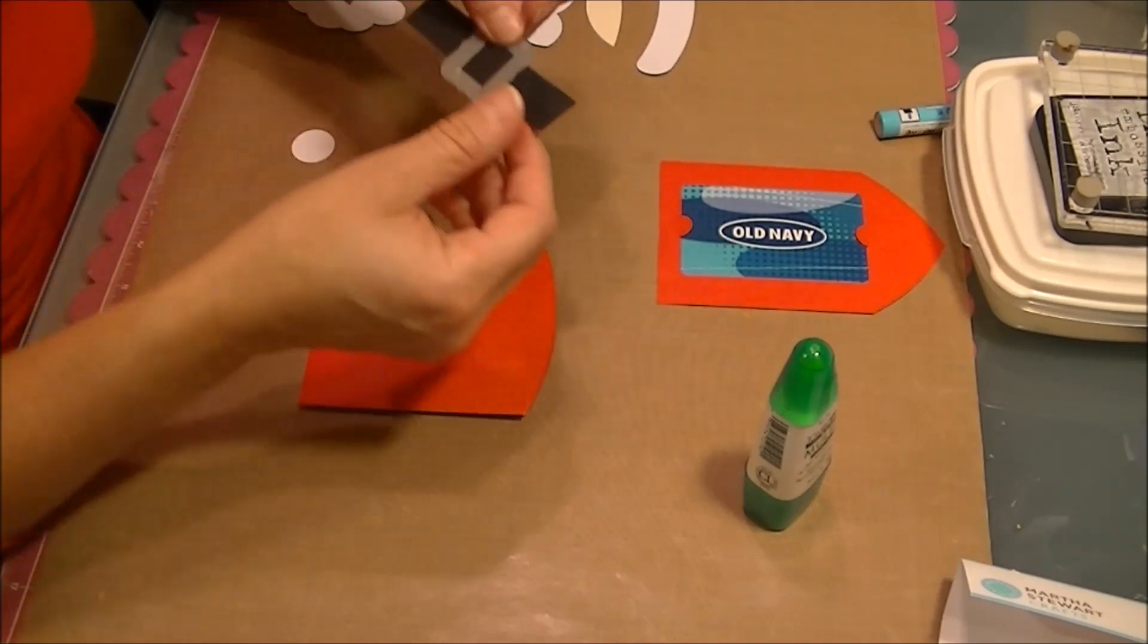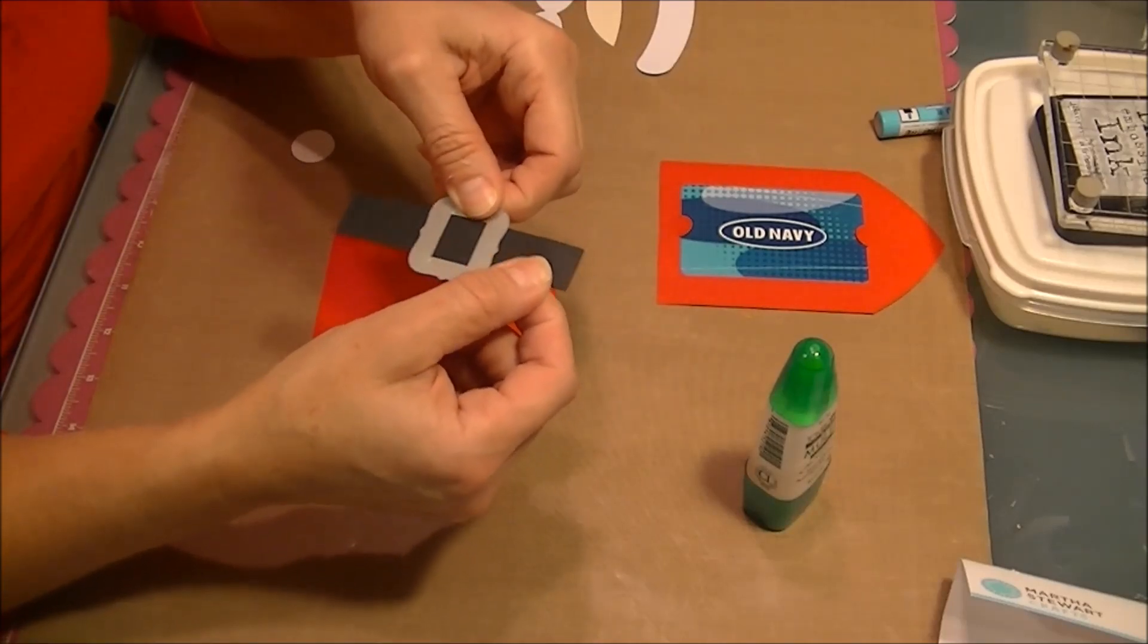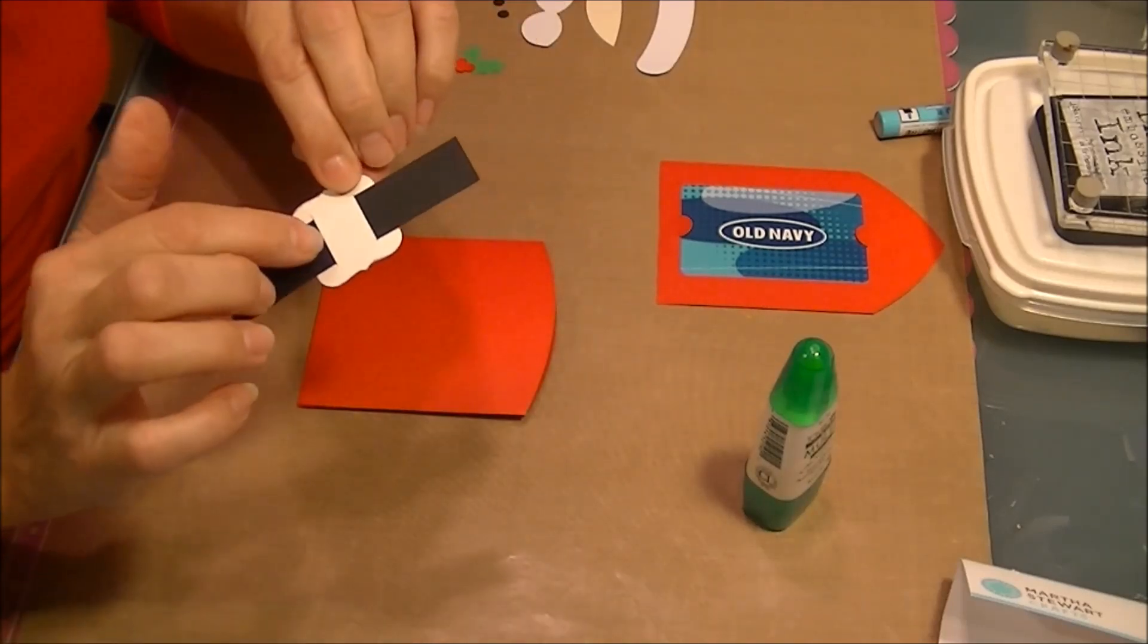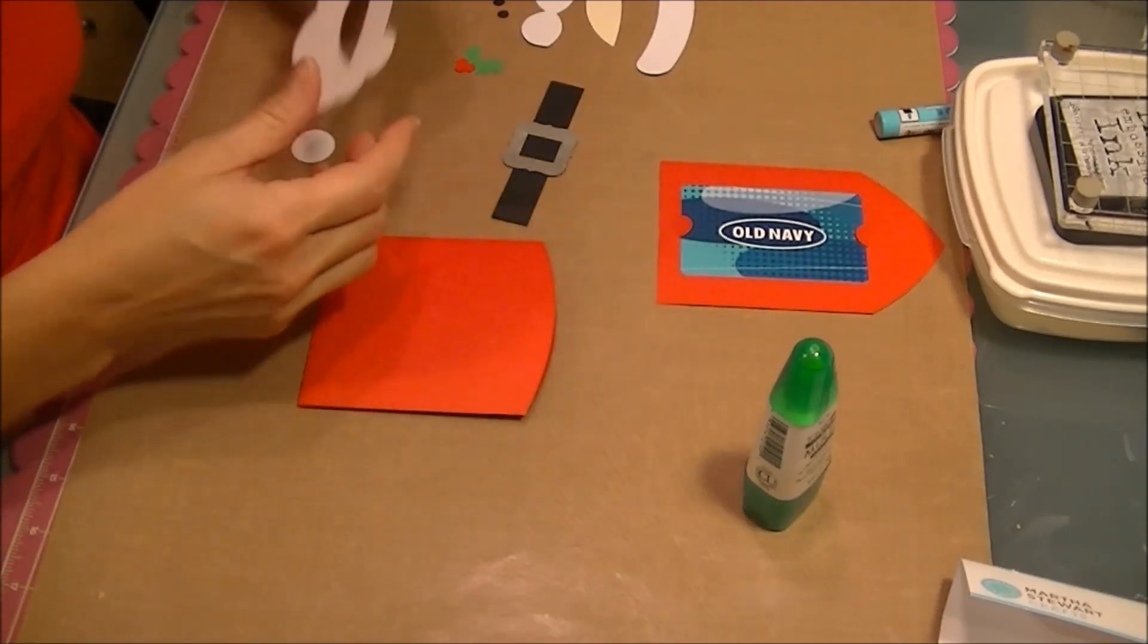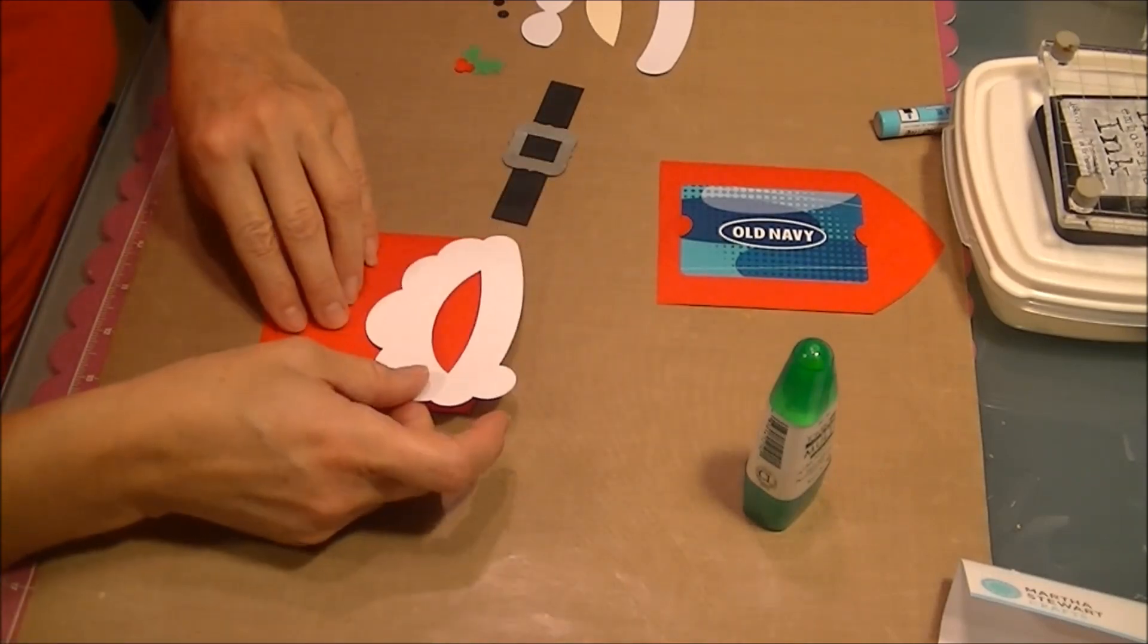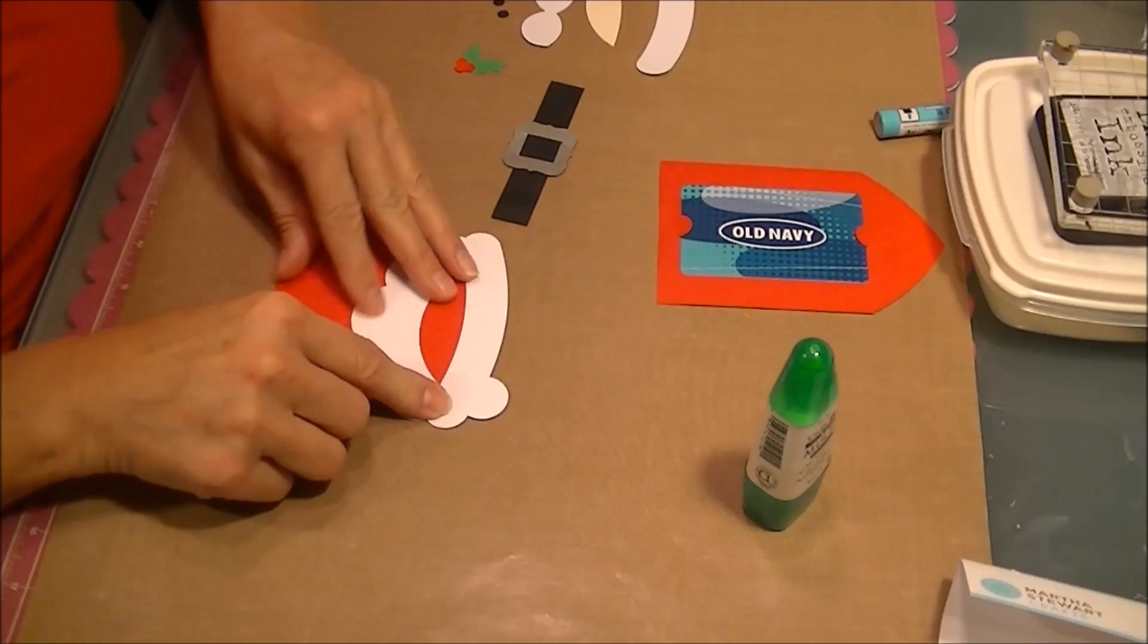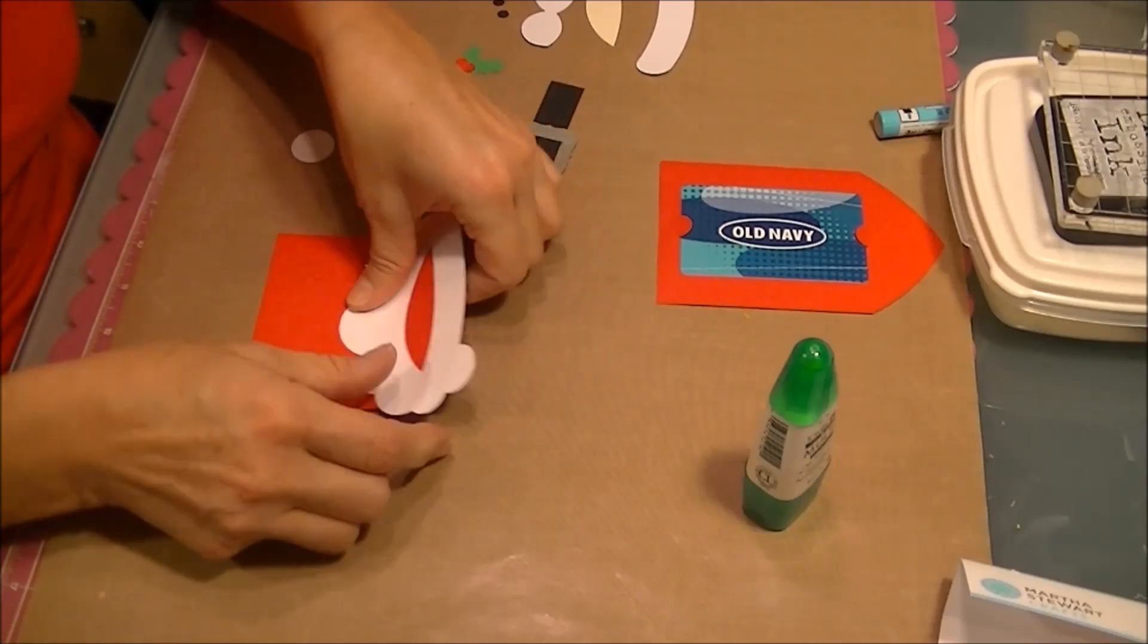This is the belt and it's got his little buckle and that was two separate pieces and you just slide it right through there. I'm going to start with his mustache and that's that right there. That's going to go right along the edge like that.